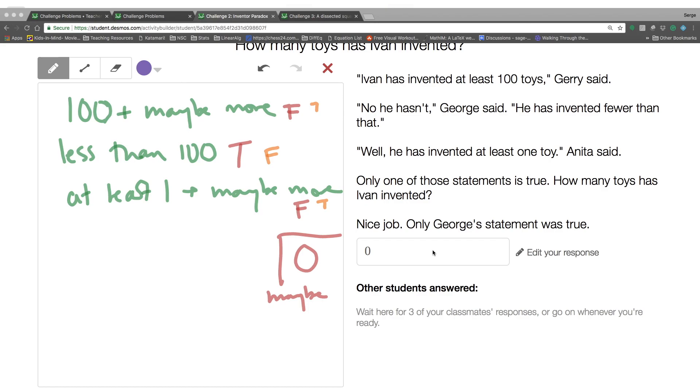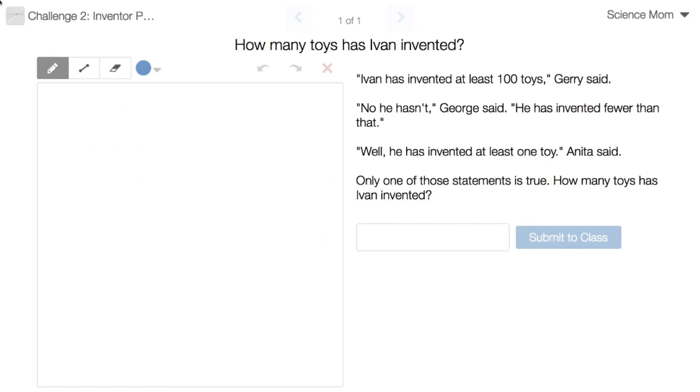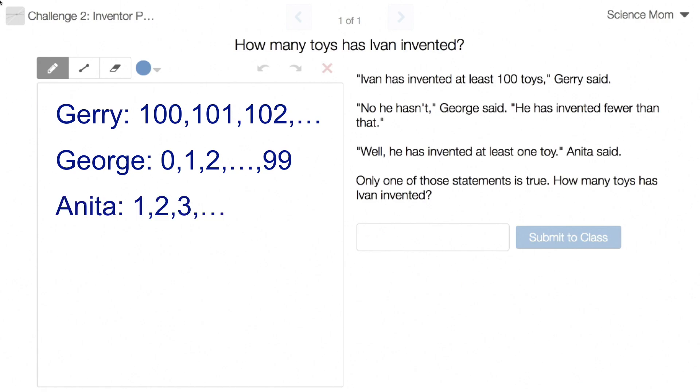Let me give a quick recap. It's probably easiest to visualize this by listing out the numbers so that we can see the exact possibilities for each of the statements. So according to Gerry, or Gary however you want to say it, Ivan has invented at least 100 toys, so that leaves the possibilities of 100, 101, 102, and so on. George says he's invented fewer than 100, so that includes the numbers zero up to 99.